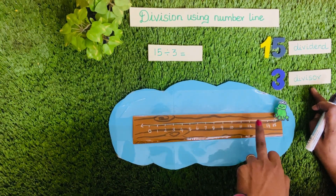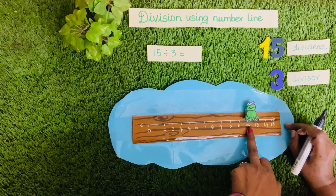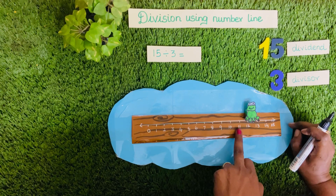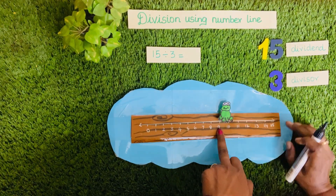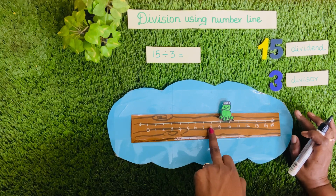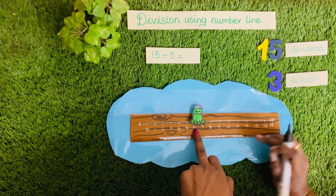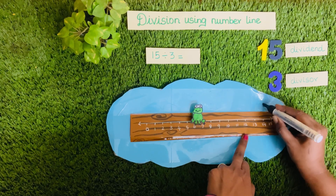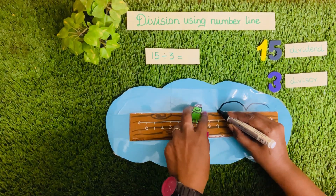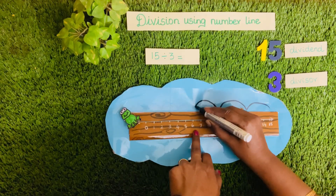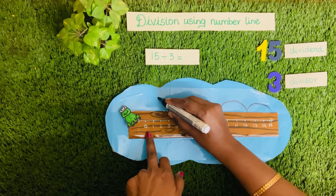The frog jumps 3 spaces at a time. The first jump lands on 12. Then again 3 spaces — landing on 9. Then again 3 spaces — reaching the number 6. So from 15 to 12, then 12 to 9, then 9 to 6, then from 6 to 3, and lastly to 0.